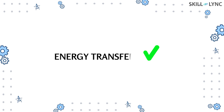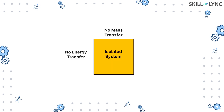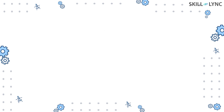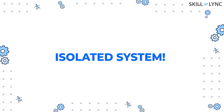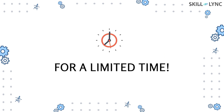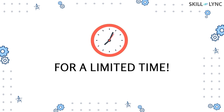However, there is a system in which neither mass nor energy is transferred through the boundary of the system. Such systems are known as isolated systems. These systems are not practically possible, but there are some systems which stay as isolated systems for some time before eventually becoming a closed system.